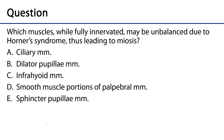Miosis is a constricting of the pupil, so we can eliminate ciliary muscles because they are used for accommodation of the lens. We can eliminate infrahyoid muscles because we're not doing anything with the hyoid bone or thyroid cartilage. We're also not dealing with the palpebral muscles, and that leaves dilator pupillae and sphincter pupillae muscles.